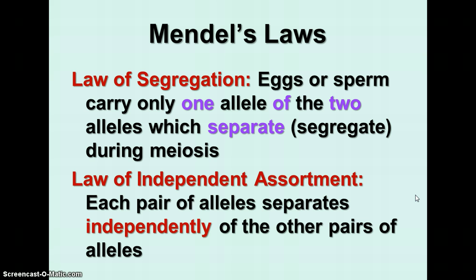Now we're going to get into Mendel's laws, and this is important. We don't have too many laws in biology — we have a lot of theories and trends, but not many laws. The laws about genetics are called Mendel's laws because these are the rules Mendel came up with through his study of pea plants. The law of segregation means that the egg or sperm carry only one allele of the two alleles, which separate during meiosis. The law of independent assortment means that each pair of alleles separates independently of the other pairs. The alleles for flower color are not dependent upon the alleles for height of the plant or the position of the flower on the stem.